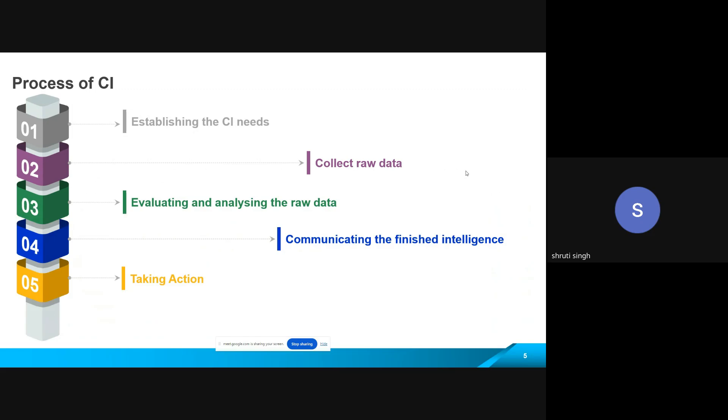Okay, now coming on to the process of CI. When we talk about the process of CI, on a very broad level I would define it in four terms. Now these four activities would be, first of all, establishing the CI. Why exactly do you need to do this analysis and what output are you expecting to generate from this particular analysis? Okay, so establishing the CI needs. Once that CI need is established, then you start collecting the raw data so that you can do the analysis and then create an intelligence report.